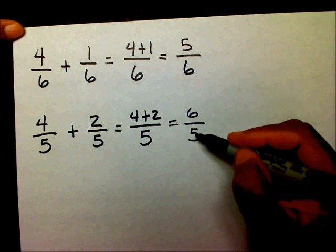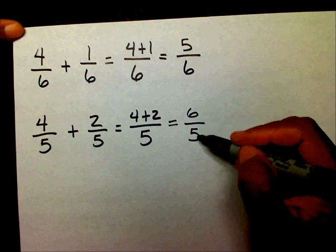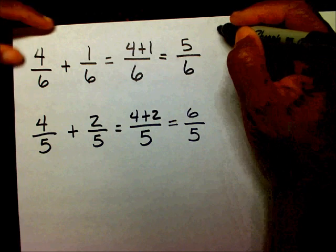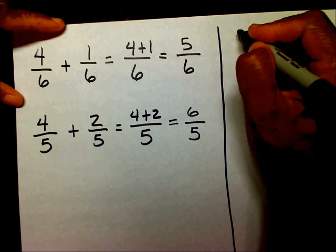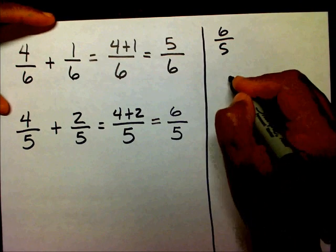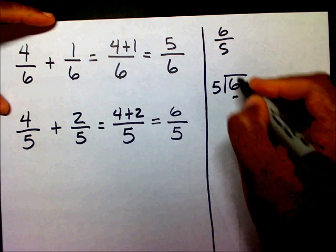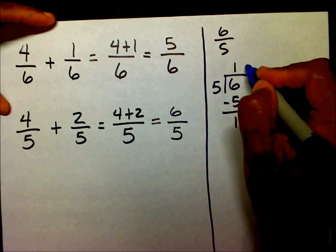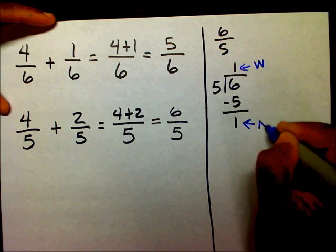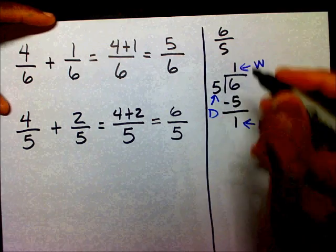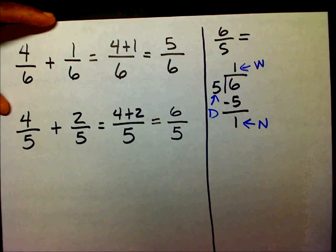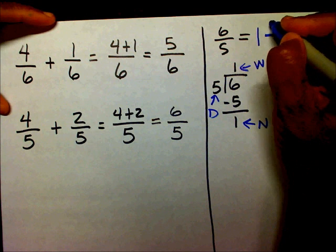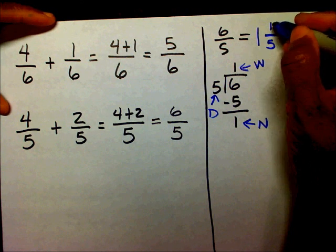6/5. And if you remember, this is called an improper fraction. So we need to change this to a mixed number. I'm going to have 6/5. I'm going to divide 6 divided by 5. 5 goes into 6 one time. I'm going to subtract. And if you remember, this is my whole number. This is my numerator. And this is my new denominator. So 6/5 changes to 1 and 1/5.